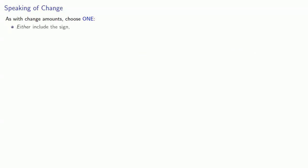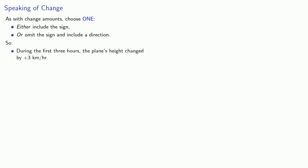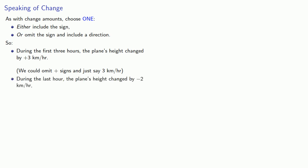As with change amounts, we should always choose one convention: either include the sign, or omit the sign and include a direction. We might say that during the first three hours, the plane's height changed by plus three kilometers per hour — since this is positive, we could omit the plus sign and just say three kilometers per hour. During the last hour, the plane's height changed by minus two kilometers per hour, or the plane's height decreased by two kilometers per hour, where since we use the word decreased, we omit the sign.